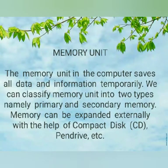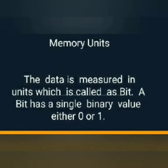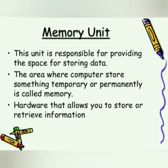The memory unit in the computer saves all the data and information temporarily. We can classify the memory unit into two types: primary and secondary memory. The memory can also be expanded externally with the help of compact disk, pen drive, hard disk, etc. The data stored in the computer are stored in binary values as 0s and 1s, and that data is measured in bits. The memory unit is also responsible for providing space for storing data. The area where the computer stores something temporarily or permanently is called memory. Hardware plays an important role in storing and retrieving information from the memory unit.